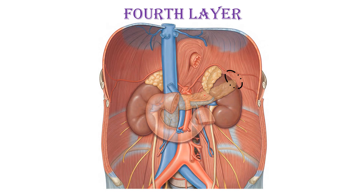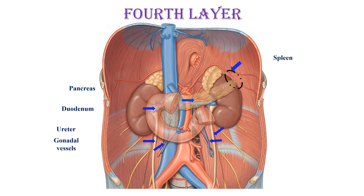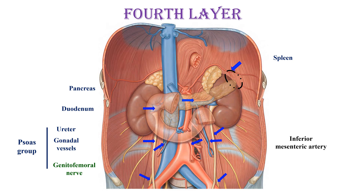The duodenum, pancreas, spleen, right and left ureters, gonadal vessels, and genitofemoral nerves on both sides are now visible. The ureter, gonadal vessels, and genitofemoral nerve together with the psoas are called the 'psoas group.' When we say the third part of the duodenum lies on the psoas group, this means the psoas major, the ureter, the genitofemoral nerve, and the gonadal vessels. When the root of the mesentery crosses the psoas group, it crosses those same structures. The inferior mesenteric artery takes its origin deep to the third part.